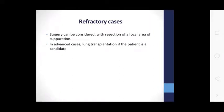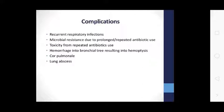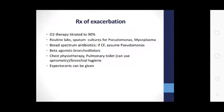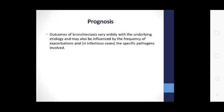In refractory cases, surgery may be considered, with resection of the focal area, and in advanced cases, lung transplantation in appropriate patients. Complications include recurrent respiratory infections, microbial resistance due to prolonged repeated antibiotic use, antibiotic toxicity, hemorrhage into bronchial vessels, hemoptysis, cor pulmonale, and lung abscess. Bronchiectasis exacerbations present with increased sputum over baseline, thicker sputum, low-grade fever, increased shortness of breath, and pleuritic chest pain.